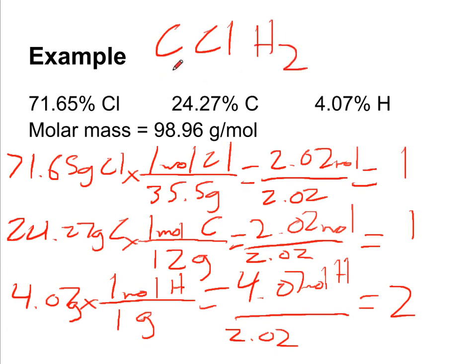Now let's see if that matches our molar mass that was given. We've got 12 plus 35.5 from the chlorine plus 2 from the hydrogen. The molar mass of this is 49.5 grams per mole.